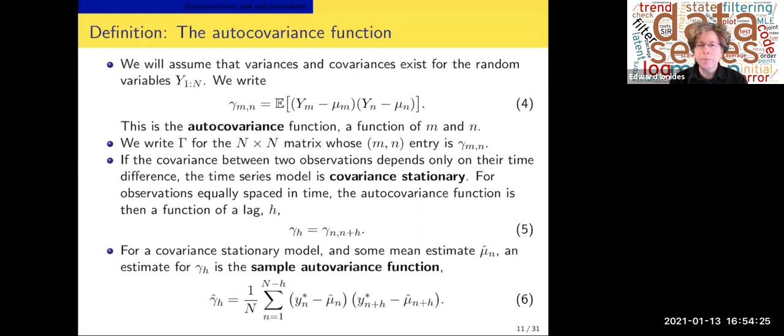If you have a covariance stationary model and some mean estimate μ̂n, you have a natural estimate for γh, which is the sample autocovariance function. It's the classical estimator of covariance evaluated at all the pairs of observations separated by lag h. It's in fact almost the classical estimator, as we pointed out in chapter one. It's one over n, not one over n minus h or one over n minus h minus one, for reasons that may pop up later in the course.